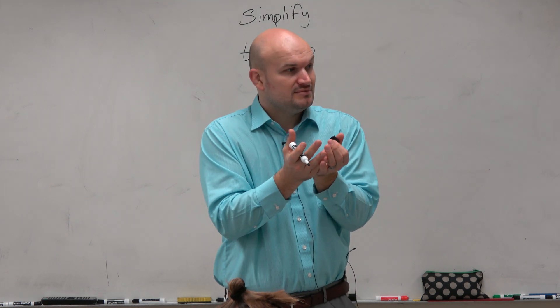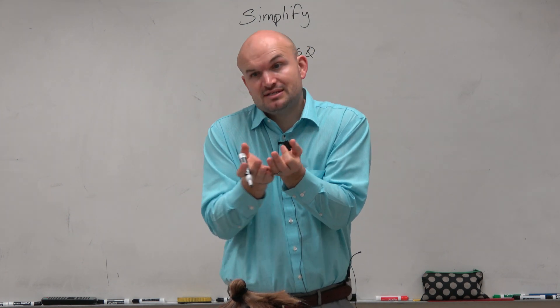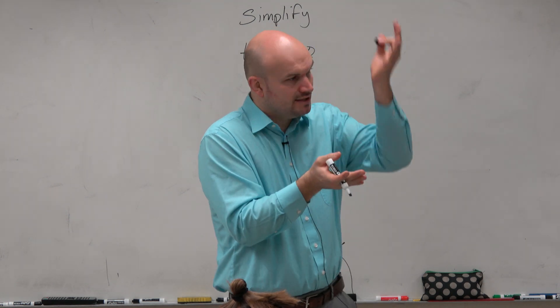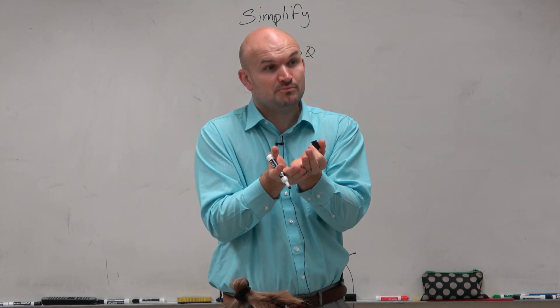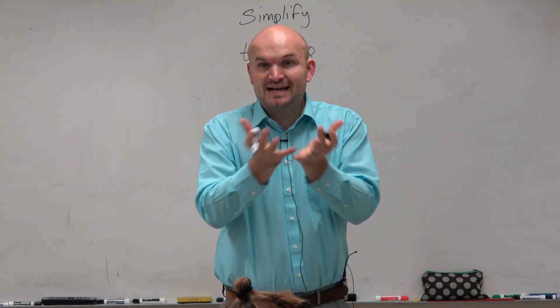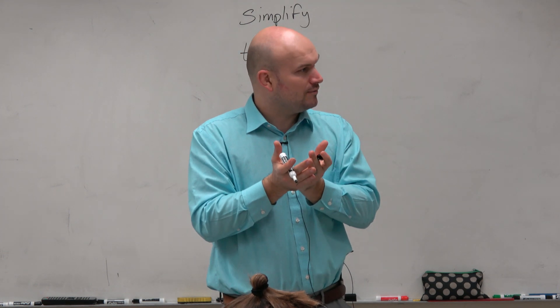Or we divided things out. For instance, simplifying 2 over 4. You can divide common terms out by applying division property. So you're either combining things or dividing things out when you're simplifying.